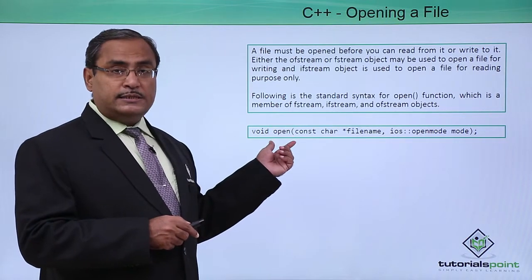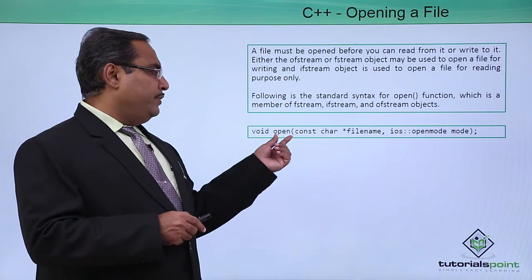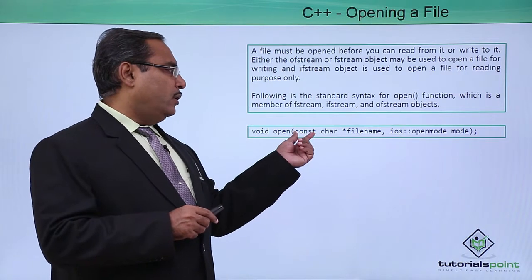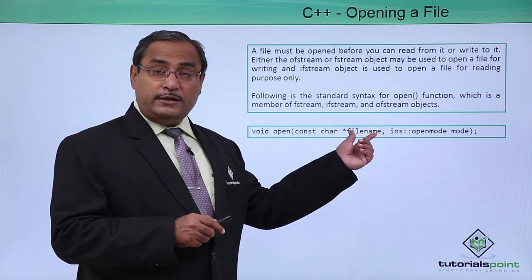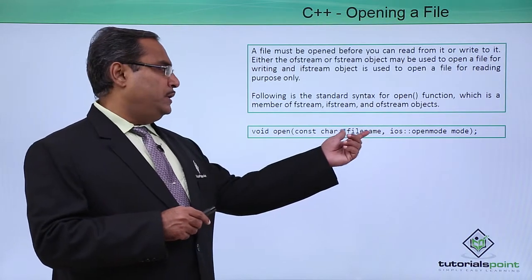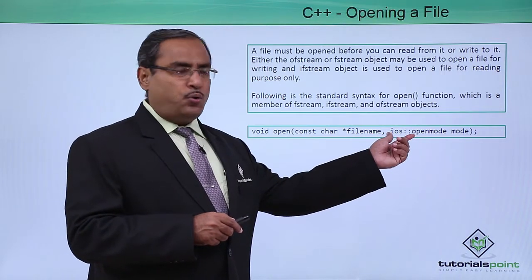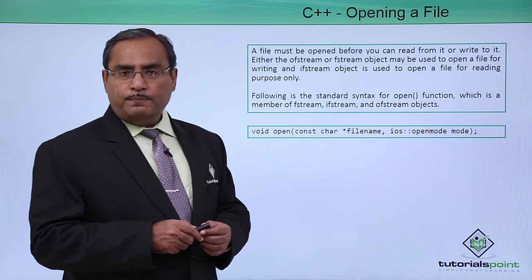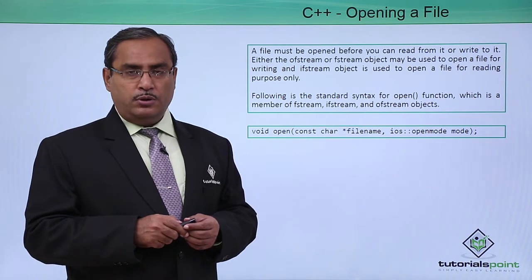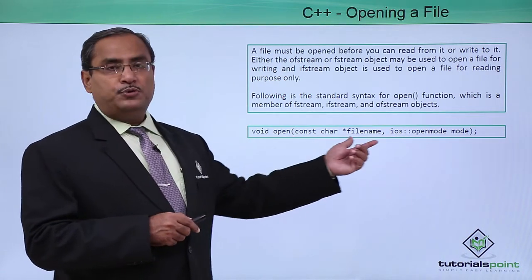Here we have the declaration of the open function. It returns void, so it has no return type. It takes a const character pointer as the filename — the filename will be expressed as a string passed as the first parameter. The second parameter is ios::openmode mode. There are many different modes available, which we will discuss now, and one of the modes must be specified. So it requires two input arguments.